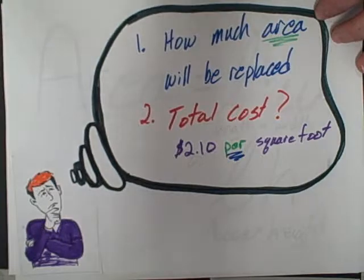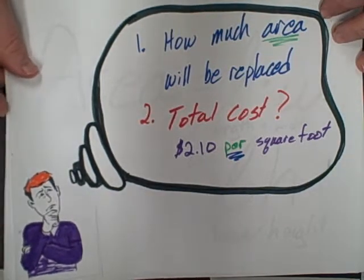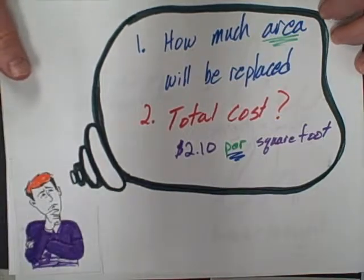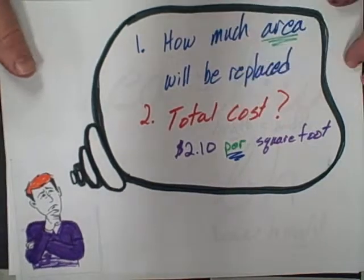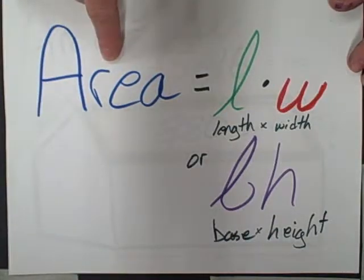Mr. Barber thinks to himself: first of all, how much area will be replaced? And what's going to be the total cost if it's $2.10 per square foot? Again, to find the area, we multiply length times width, or we call it base times height.